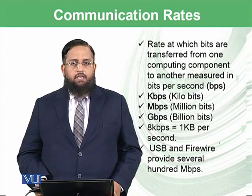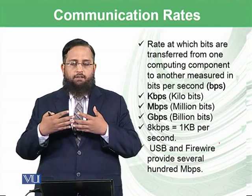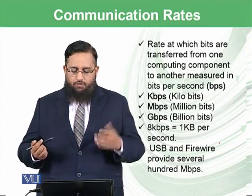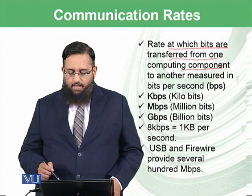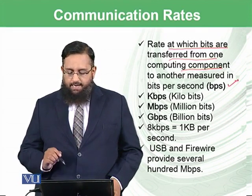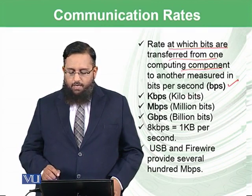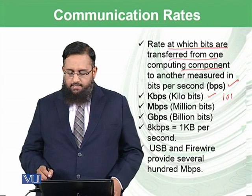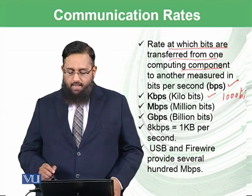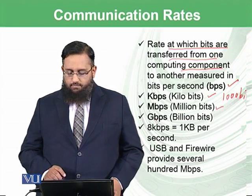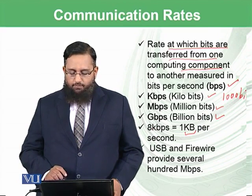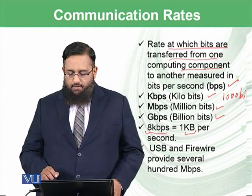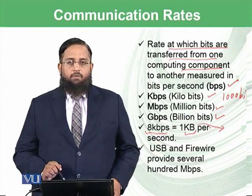Our next topic is communication rates. When devices are communicating, whether serial or parallel, it depends on the rate at which bits are transferred from one computing component to another. The basic unit is bits per second (bps). The next unit is kbps — kilobits per second — meaning thousands of bits, not bytes. Then megabits, then gigabits — one billion bits. For example, 8 kbps equals 1 kilobyte per second, because there are 8 bits in one byte.